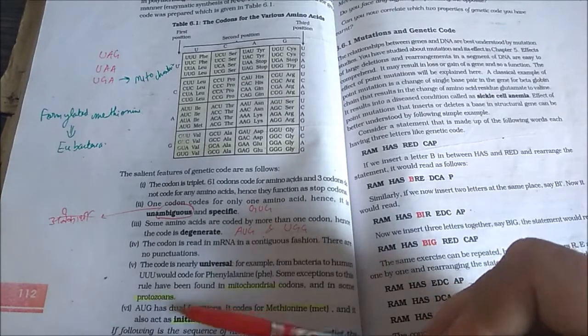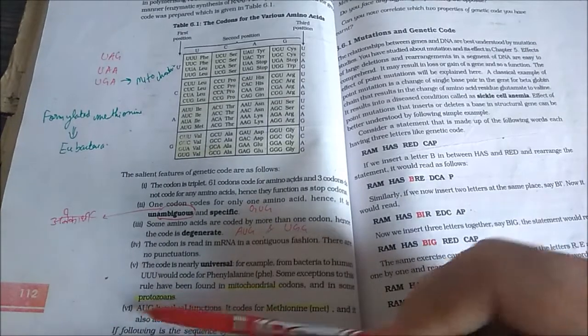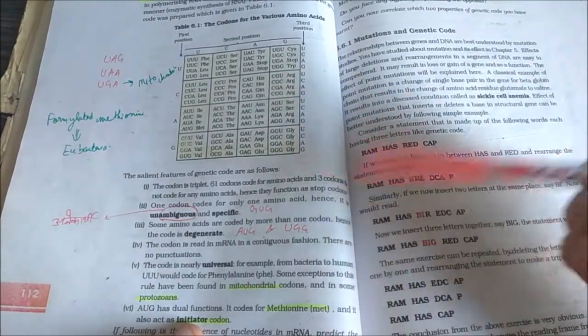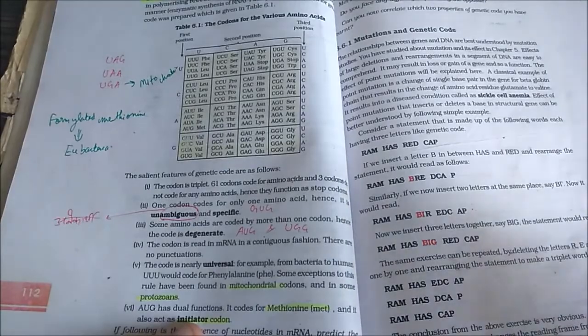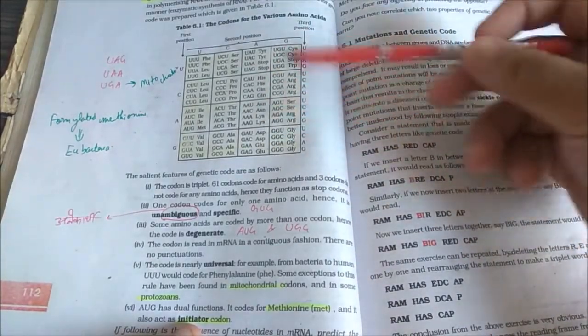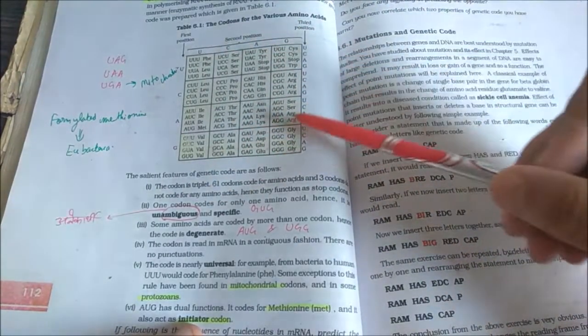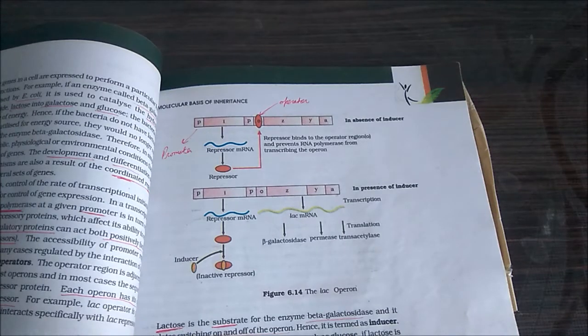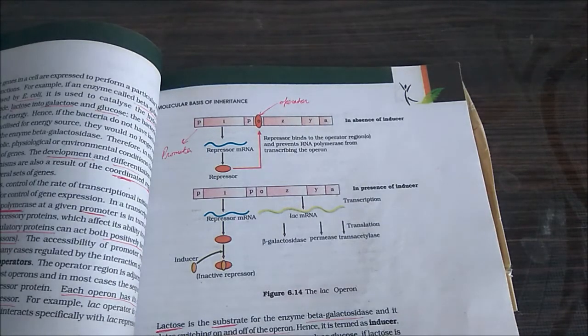The tables are very important. There was a question which was recently asked in AIIMS exam related to this table. So these were all the methods that you can follow to score about more than 300 marks in your biology for NEET easily if you follow these all methods. Thank you for watching. Please like, subscribe and share if you like my video. Thank you.